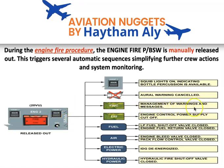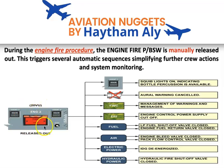Also, releasing the fire push button triggers flight warning computer management of warnings and messages. Additionally, it cuts off FADEC power supply through the engine interface unit — engine control power supply is cut off.